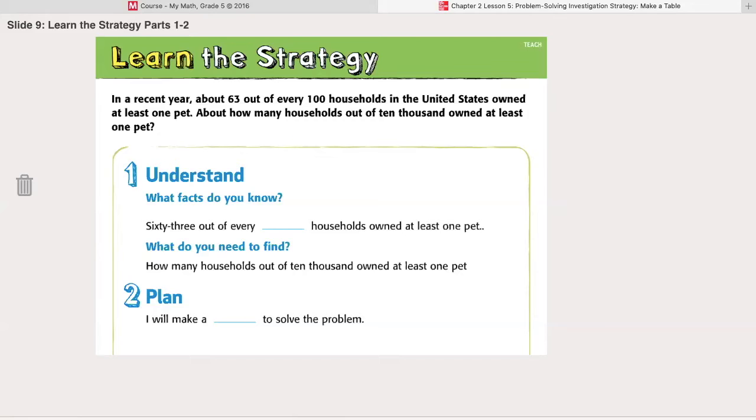about 63 out of every 100 households in the United States owned at least one pet. About how many households out of 10,000 owned at least one pet? Step one, understand. What facts do you know? 63 out of every 100 households owned at least one pet. What do you need to find? How many households out of 10,000 owned at least one pet. I will make a table to solve the problem.